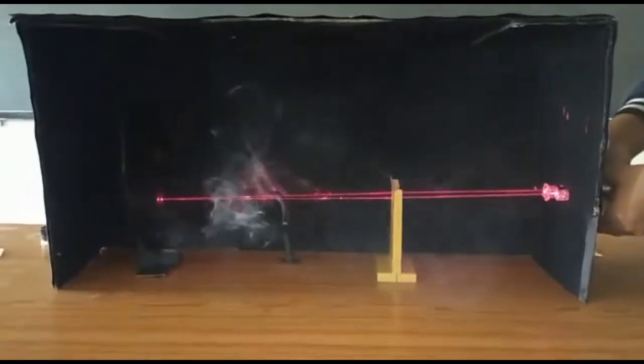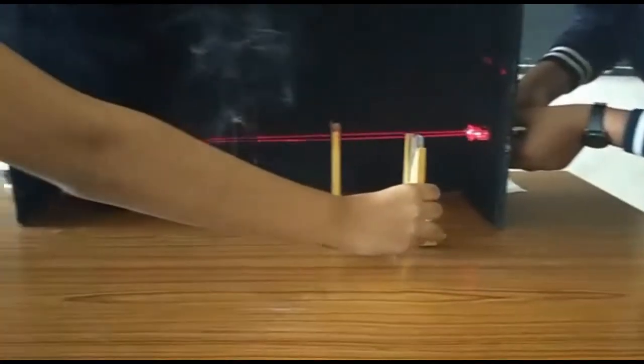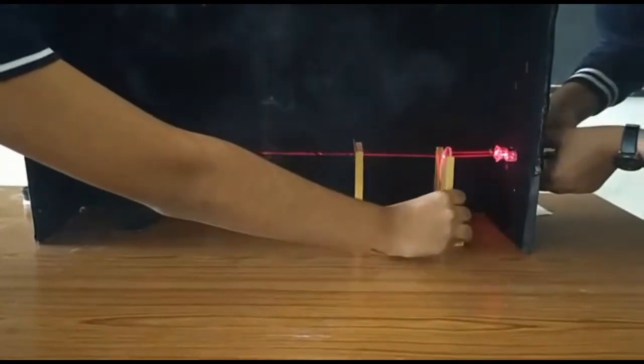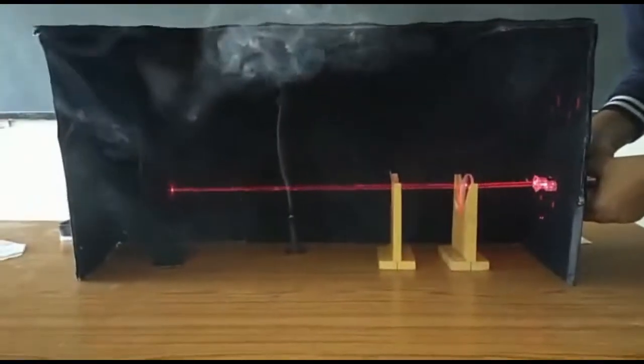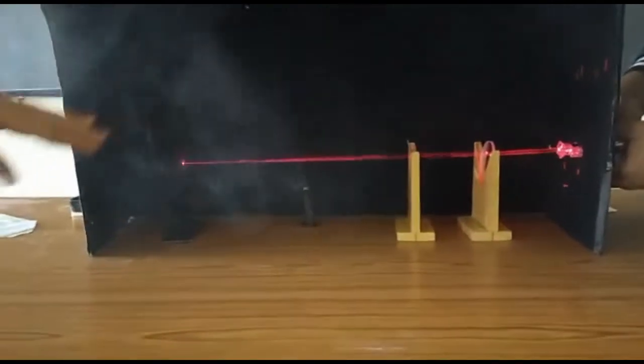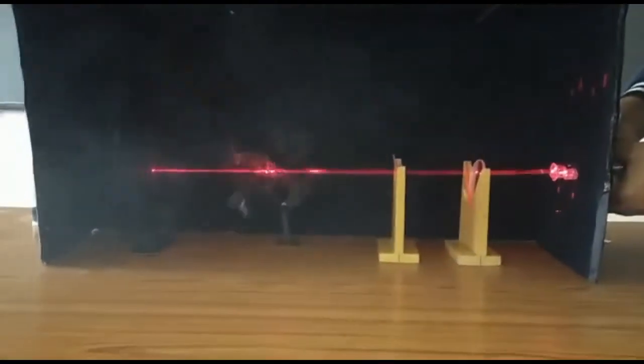To correct this defect, we add a concave diverging lens. You can see that the focal point now forms at the correct location. Now the person can see objects clearly.